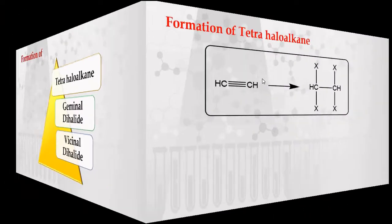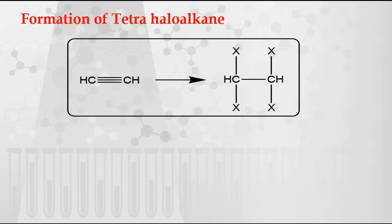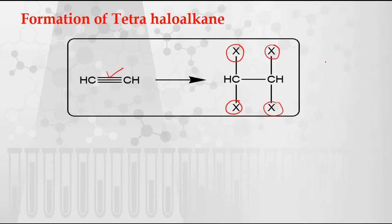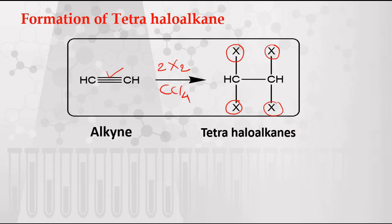The first reaction is the formation of tetrahaloalkane. Tetrahalo means there are four halogen atoms which are joined across this carbon-carbon triple bond. For this reaction, we are using carbon tetrachloride (CCl₄), and we add 2X₂. This means we will use two equivalents of halogen for alkynes.